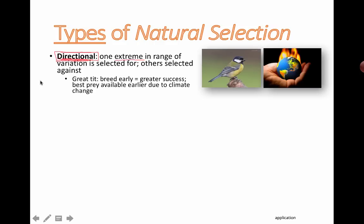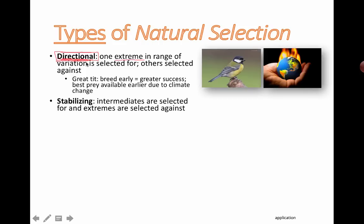Some examples — we're going to be talking about this bird a lot, the great tit, because the earlier they breed, they tend to have greater success. This is probably due to climate change over time. Those that are breeding earlier are being selected for; those that are breeding late are less likely to survive, so they can't pass on their genes. So that trait tends to disappear. That's an example of directional selection.